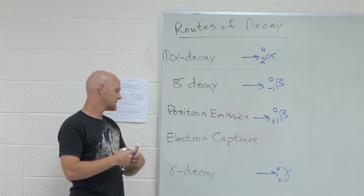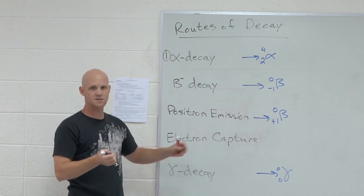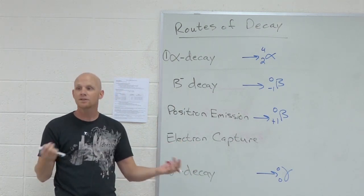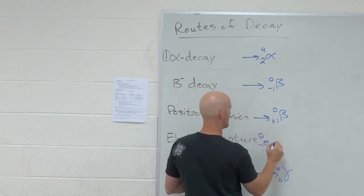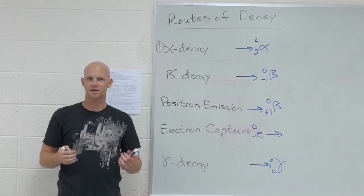The only one that's not the emission is the one you guys in particular don't have to know, the electron capture. But being that it's captured, that is the one case where the electron, again which could be written as beta, is a reactant rather than a product.